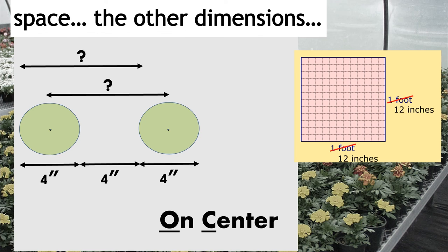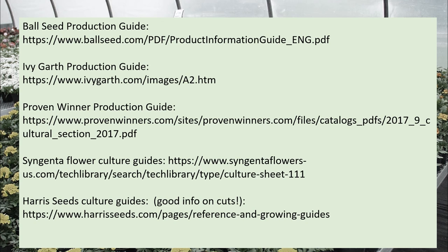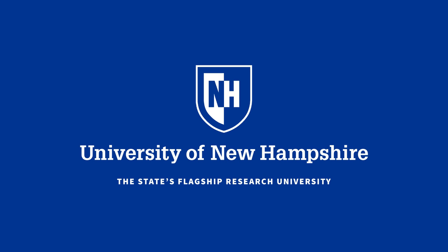So that's scheduling and that's spacing. As you build those notes, you can expand them out — I'll probably post an optional video on how to continue building out that scheduling and start to include financials as well. Here is a list of some of those production guides that we can get plug weeks and finishing weeks out of, as well as cultural information. Thank you.